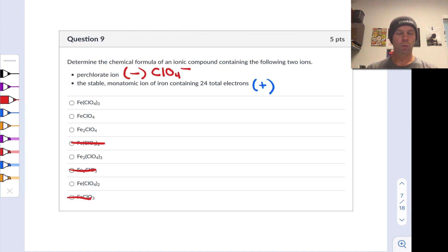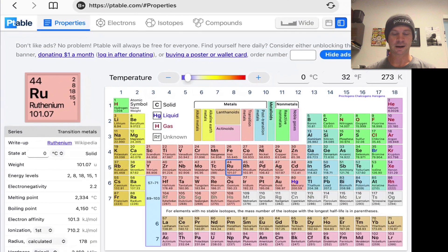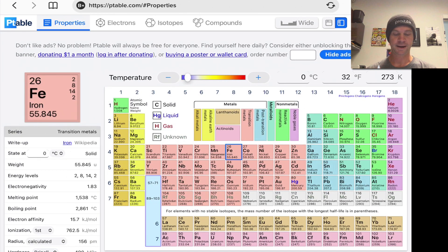What about the second bullet point? The stable monatomic cation of iron, it's got to be a cation to balance the charge of perchlorate, containing 24 total electrons. Given an electron count, my instinct is telling me to go to the periodic table and look at the atomic number of iron and compare the number of electrons in this ion to the number in the neutral atom, which corresponds to the atomic number. So on the periodic table here, we've got iron's atomic number is 26.